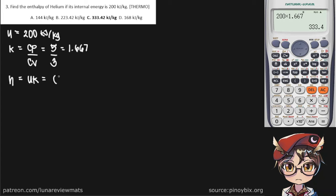Now we can start putting our values in, and computing for this we get a value of 333.4 kilojoules per kilogram.